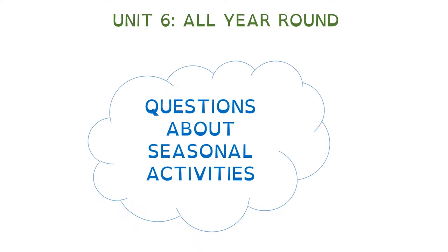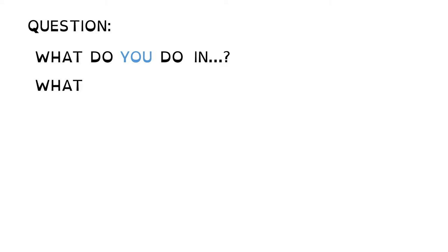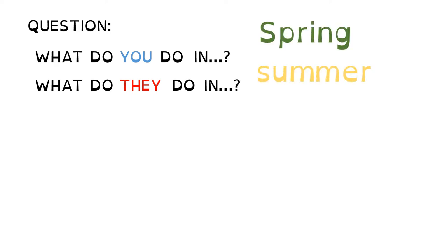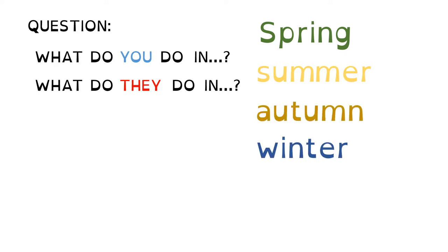Hello everyone, today we are going to continue with Unit 6, All Year Round. Now we are going to learn questions about seasonal activities. Let's start with the first question: what do you do, or what do they do? Here you can say spring, summer, autumn, or winter.